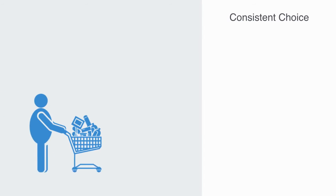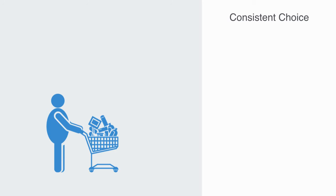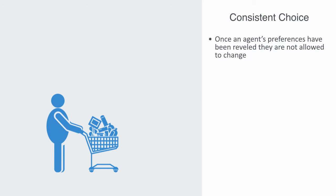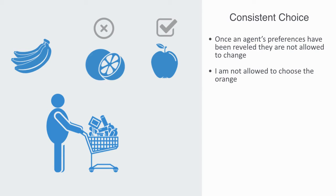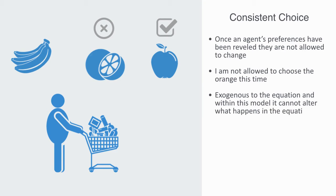An important component to this theory is what is called consistent choice. Once an agent's preferences have been revealed, they are not allowed to change unless the properties of the good they are evaluating changes. If I prefer an apple to an orange now, I cannot change my preference unless some properties of the goods change. But if all the properties stay the same and we add a banana to this set of choices and I make the choice again, I am not allowed to choose the orange.